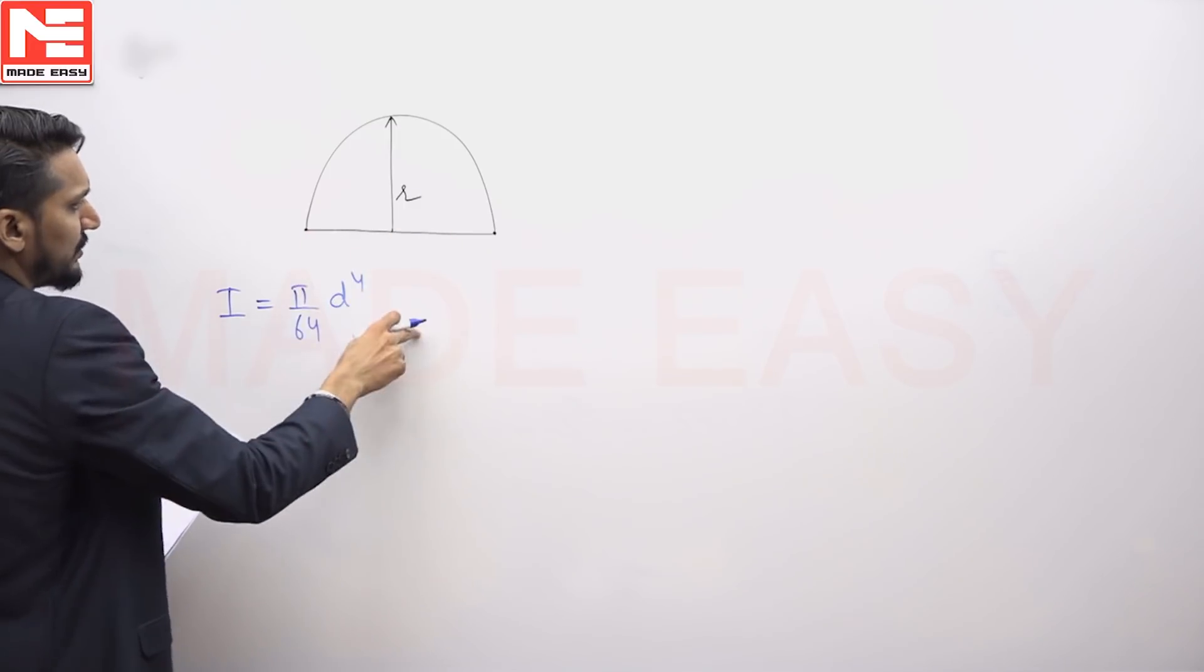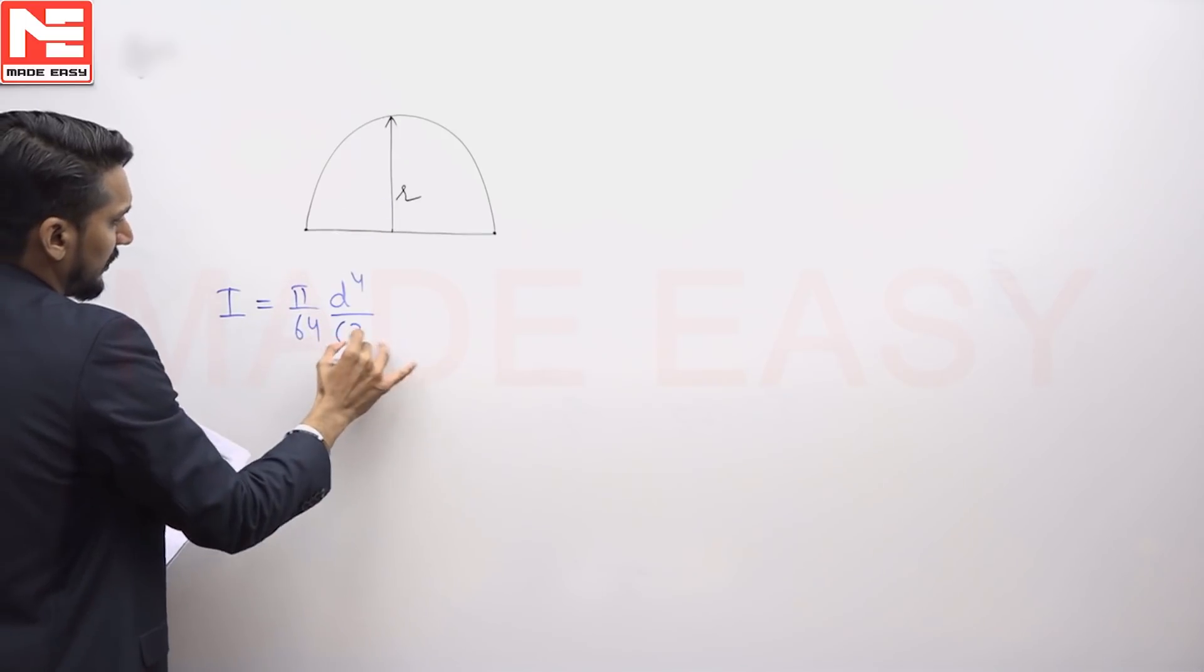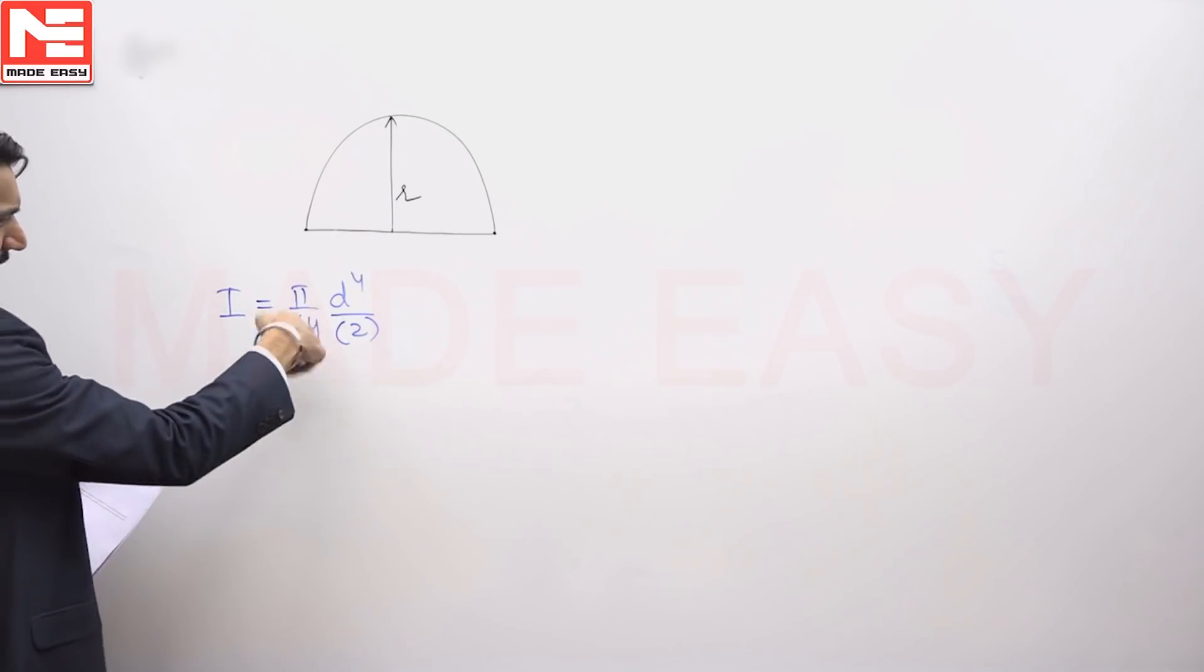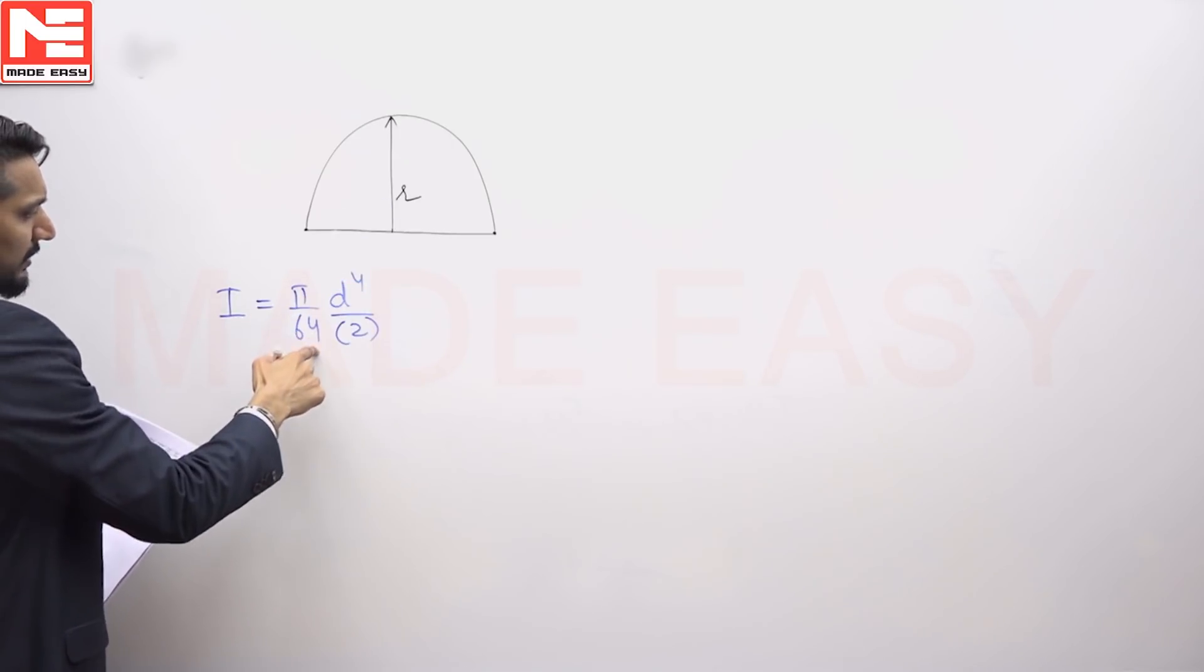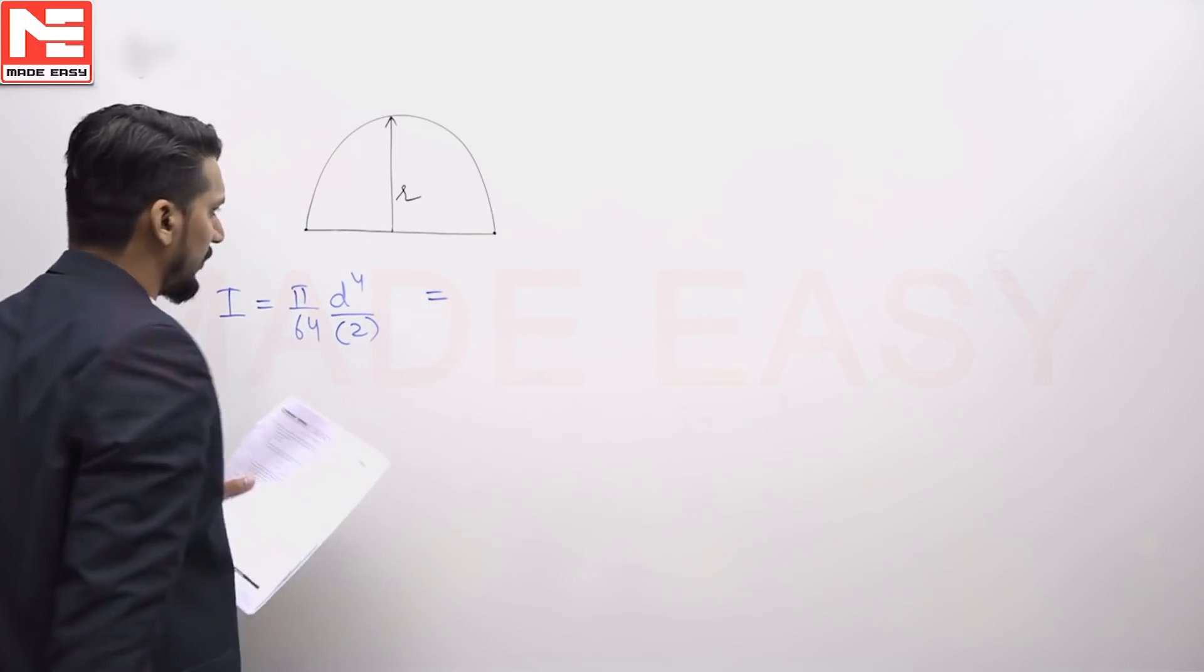as half of the circle is not here, for this particular semicircle, this I will come out to πd⁴/64 divided by 2. But in the radius form,